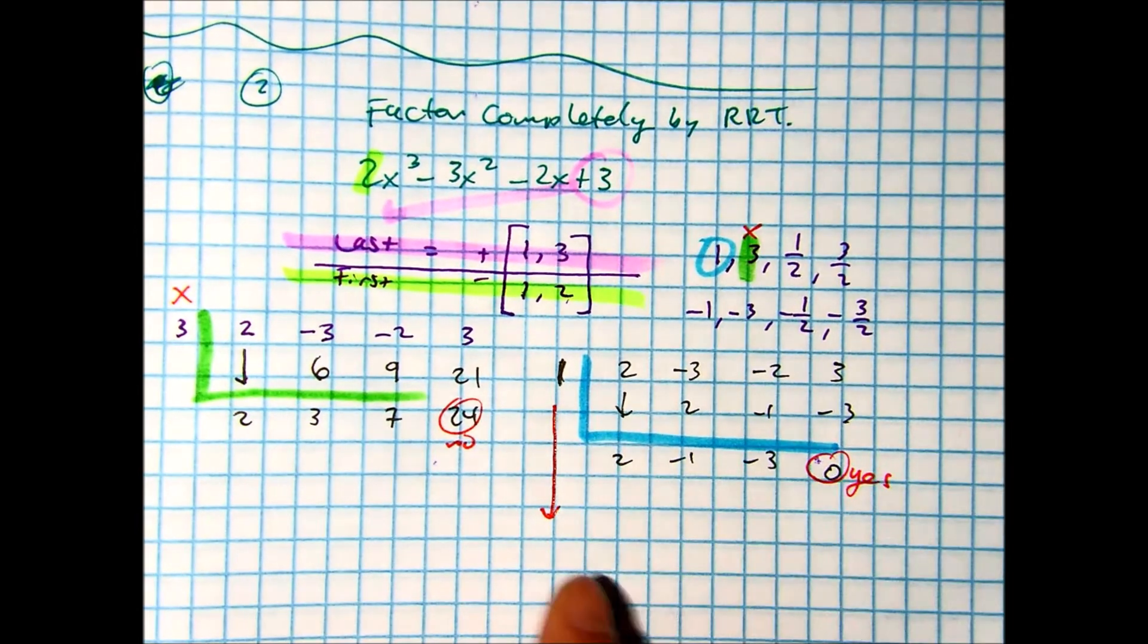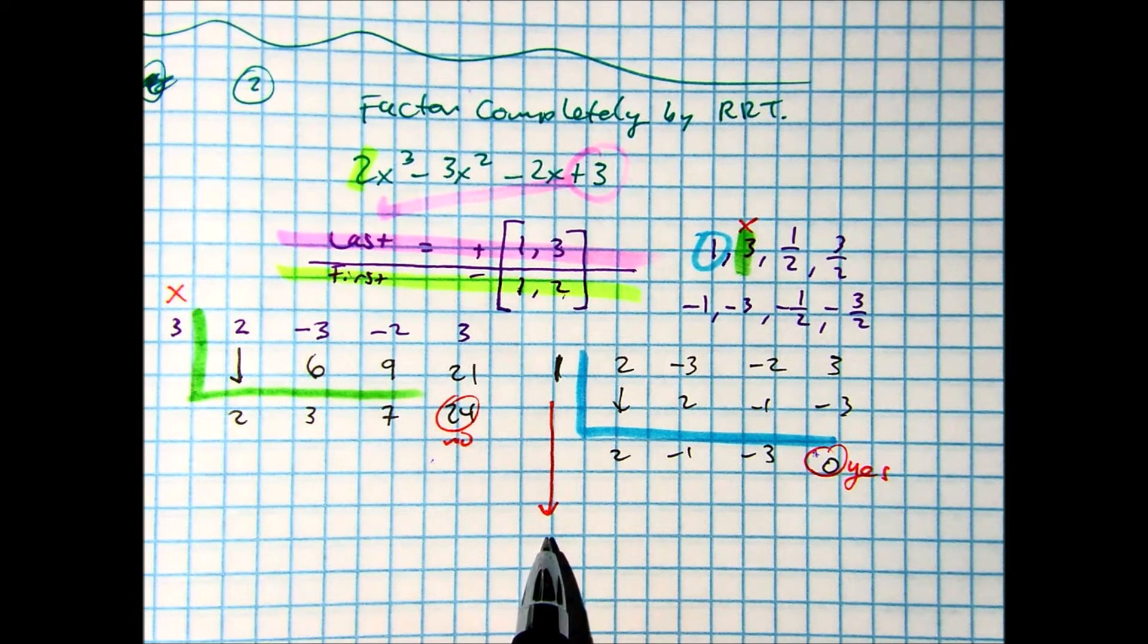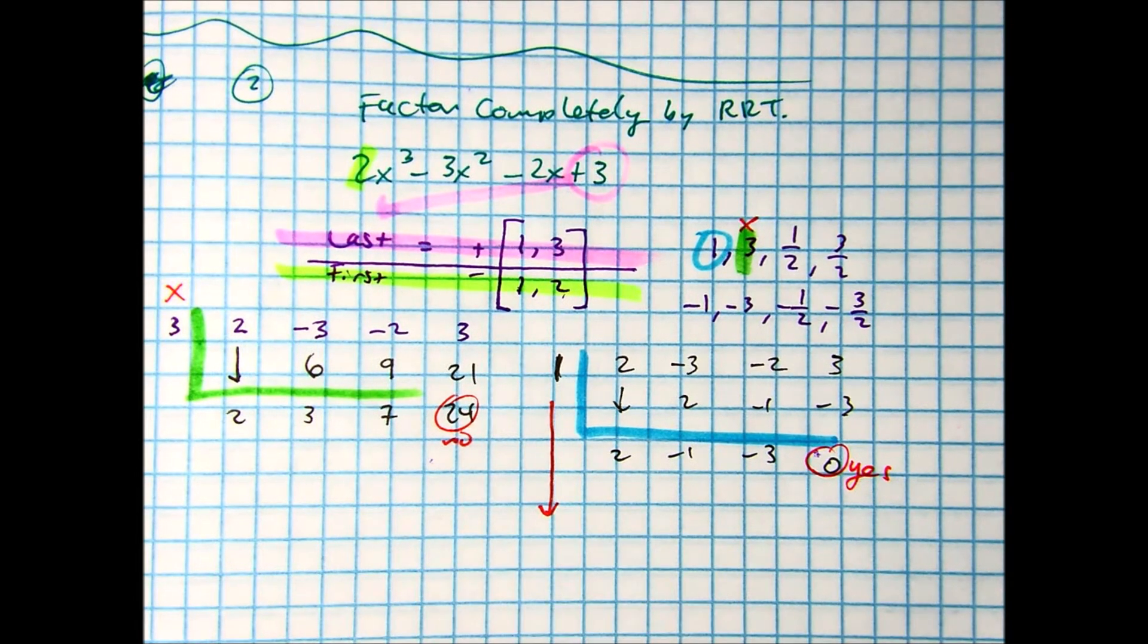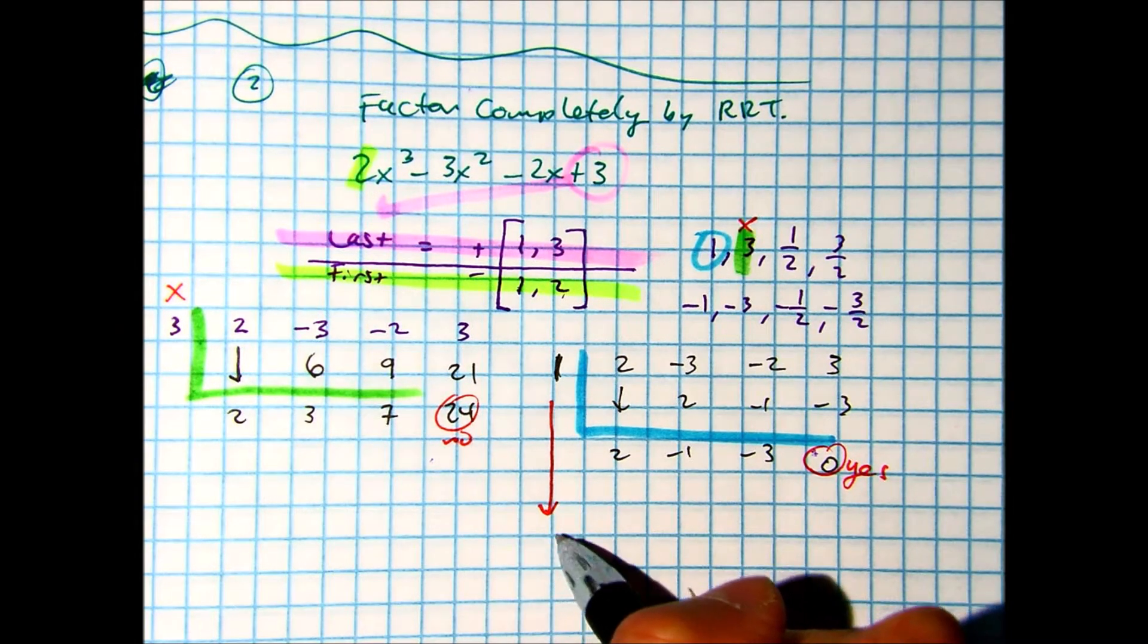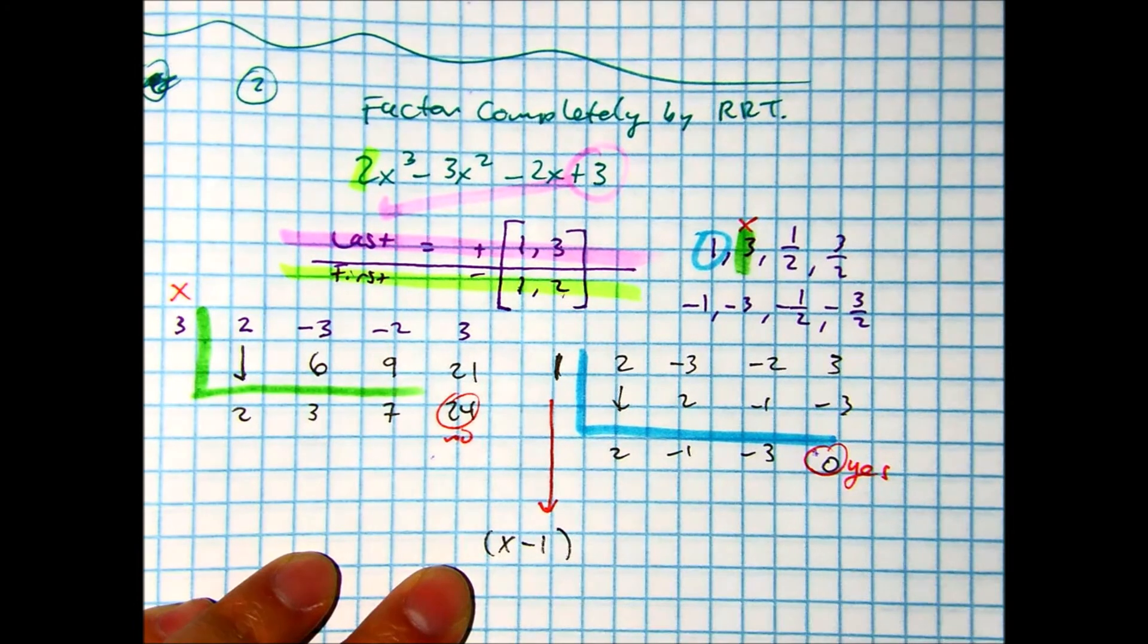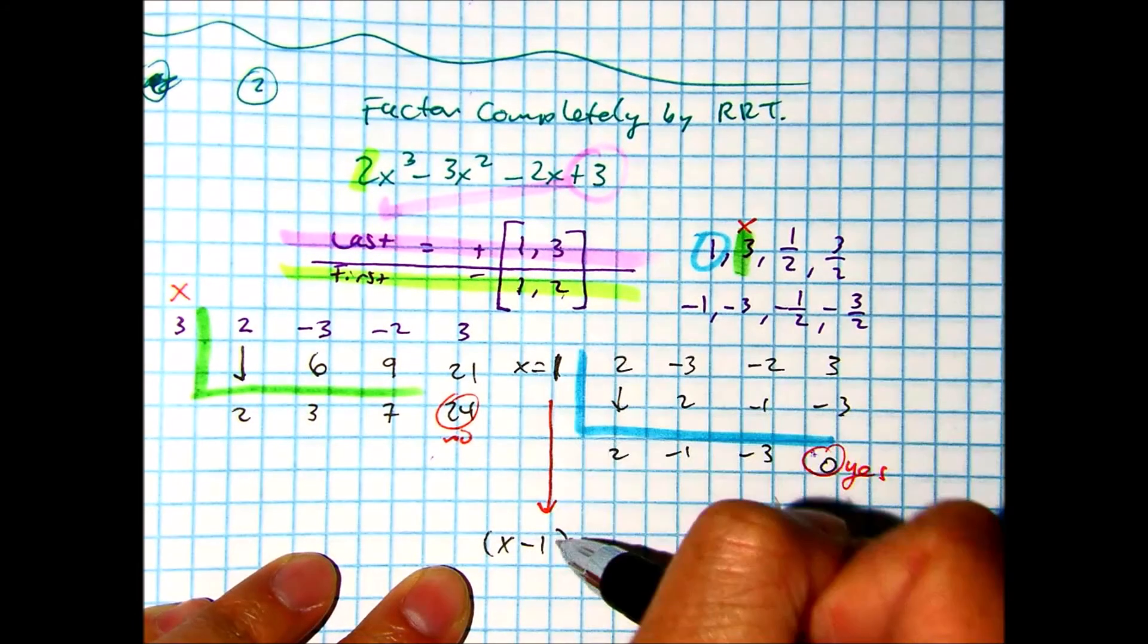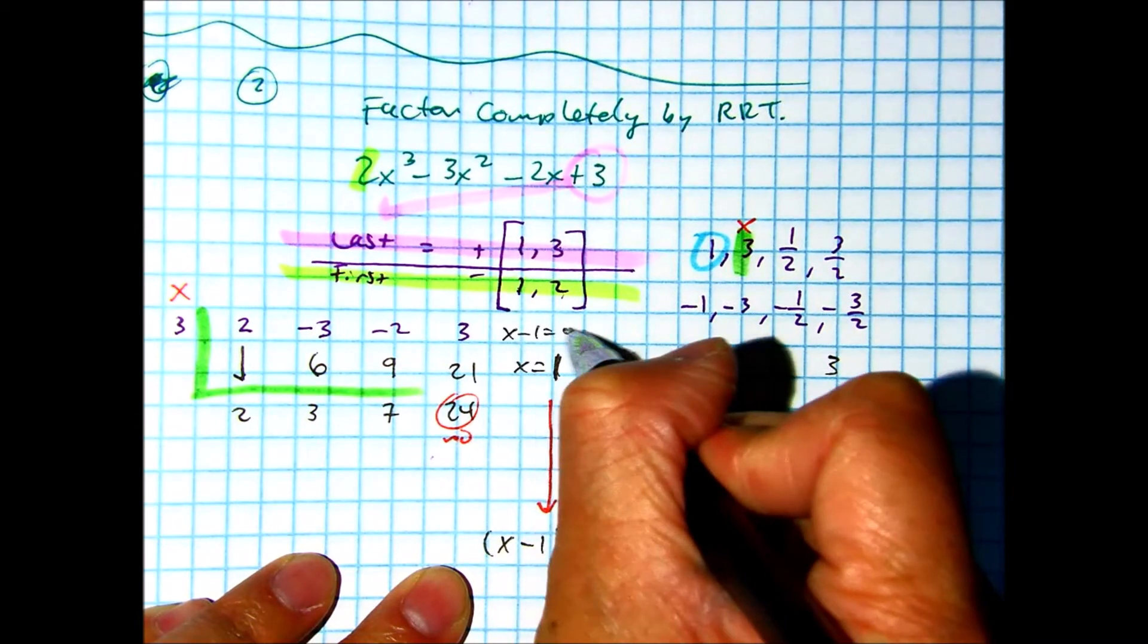Partner A, tell partner B, what do I write here? Call, what do I write here? X minus one. Remember, if you get stuck, you said it's X equals, and you need to make it equal to zero. So you would subtract one from both sides.